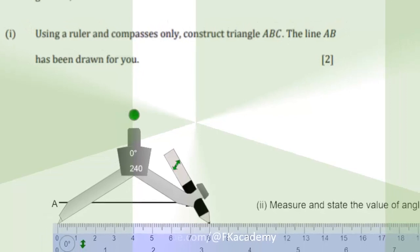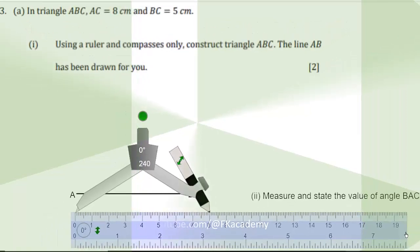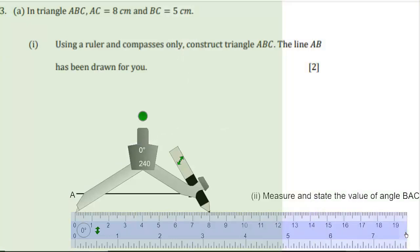This is CSEC January 2024 mathematics paper 2, question 3. In triangle ABC, AC equals 8 centimeters and BC equals 5 centimeters. Using a ruler and compasses only, construct triangle ABC.